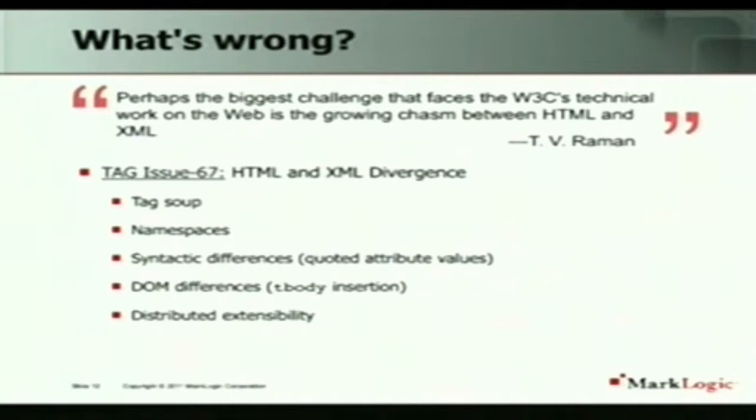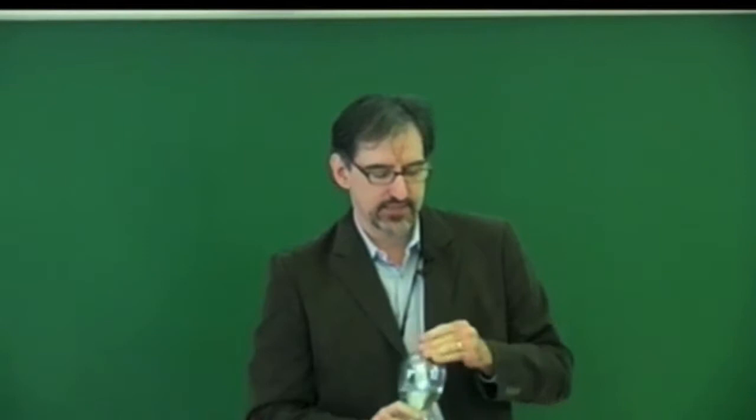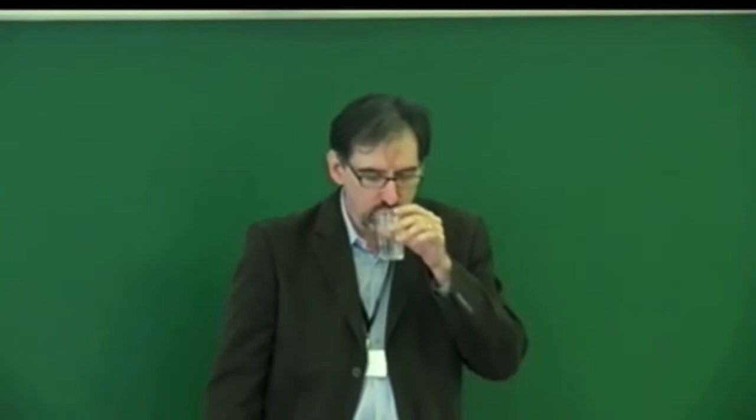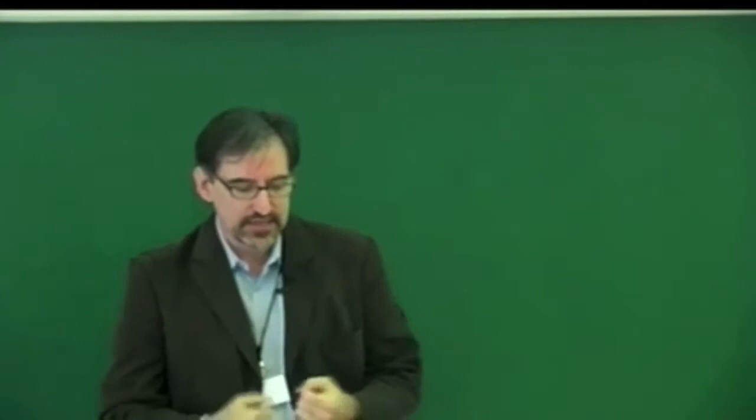The first is that HTML is really tag soup — HTML in the wild isn't actually well-formed markup very often. It's not something you can feed to an XML parser with any hope of getting anything useful out of it. Namespaces are complicated and lots of people don't like them. XML has certainly made that complicated for people. Tim loves to harp on the syntactic differences like quoted attribute values. And then I think the really big ones are some DOM differences and some distributed extensibility problems, so I'm going to look at a couple of those in more detail.